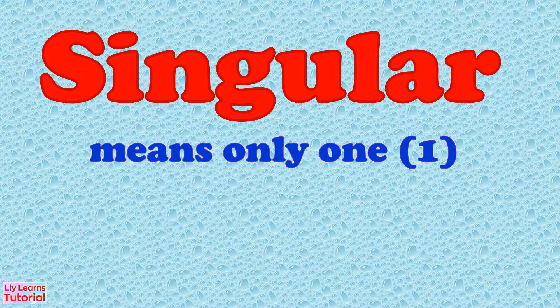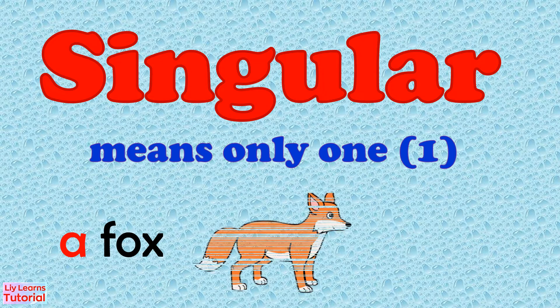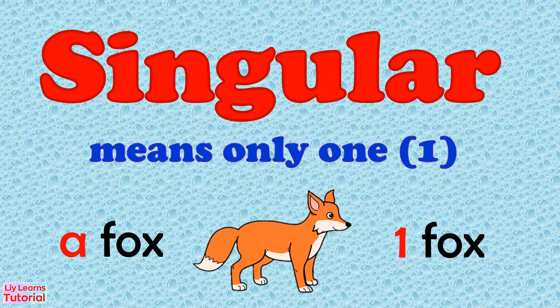When we say singular noun, we refer to only one of something. For example, a fox. There is only one fox.